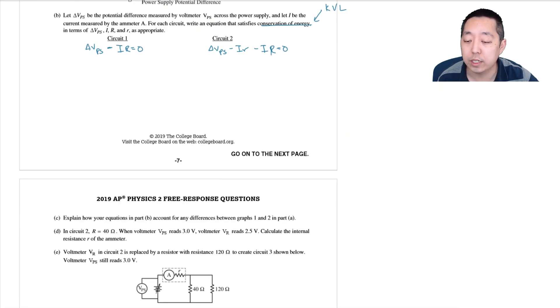Okay, explain how your equations in part b account for any differences between graph one and graph two in part a. You can simply say that delta VPS here has to equal IR and delta VPS here has to equal I times r plus R. The voltage drop has to be equal on both sides in order for the energy to be conserved and because this has a smaller r it will have a larger current.